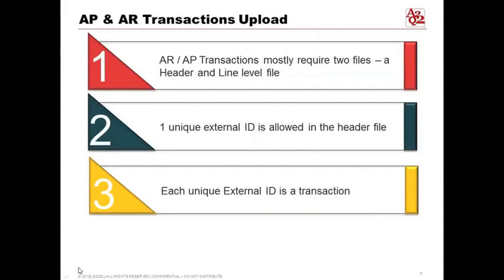There are three things to remember in AP/AR transactions upload. Number one: AP/AR transactions require two files — a header file and a line-level file. The header file is basically the summary. For example, if you have a sales invoice for a total of $1,000, that's what the header line shows. The line-level file then breaks that down — for this $1,000, one item is $700 and one item is $300. You need both the summary and the details that roll up into that summary.